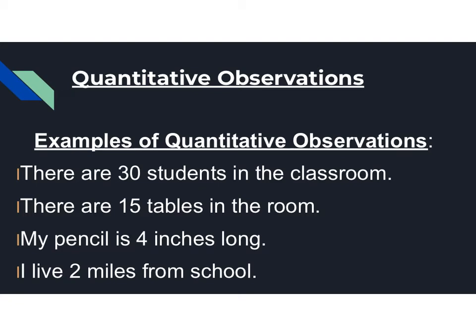Some examples are: there are 30 students in the classroom, or there are 15 tables in the classroom. My pencil is four inches long. I live two miles from school. These are all observations that have numbers or measurements in them, and that's what makes them quantitative. When you say there are 30 students in a classroom, that is a number. When you say my pencil is four inches long, that's a measurement. Anytime an observation involves numbers, we classify that as a quantitative observation.